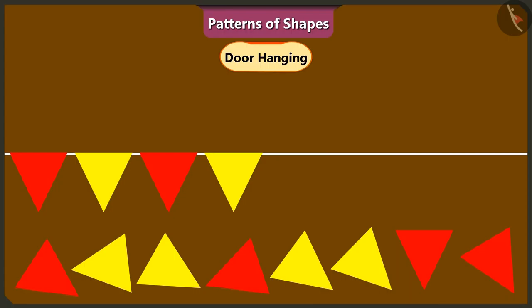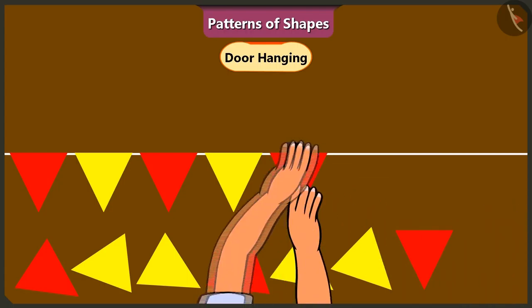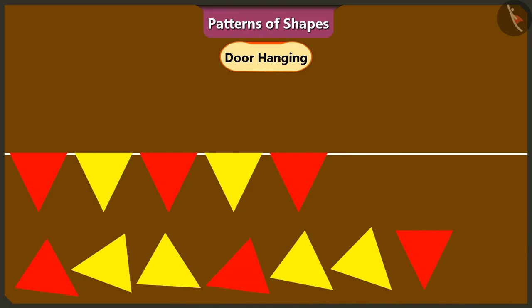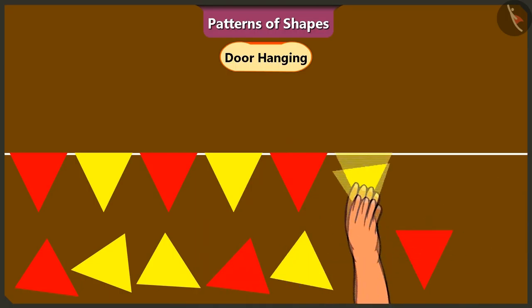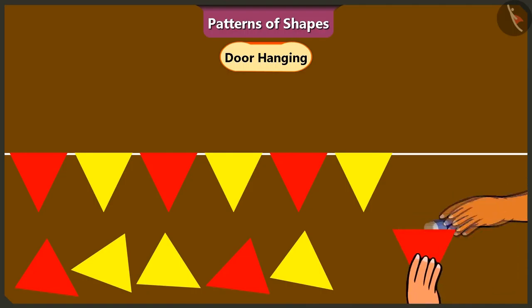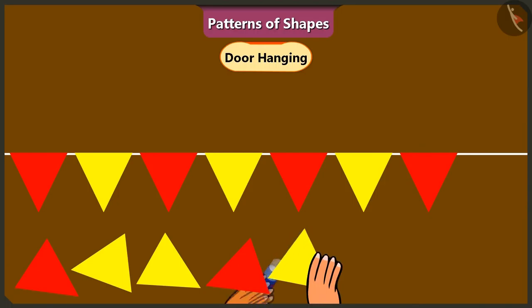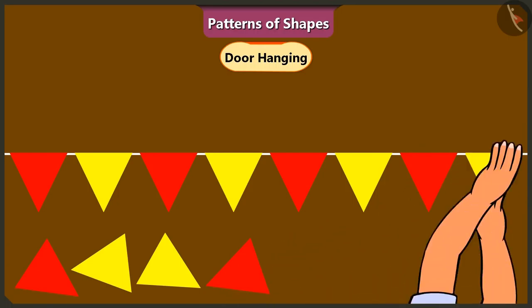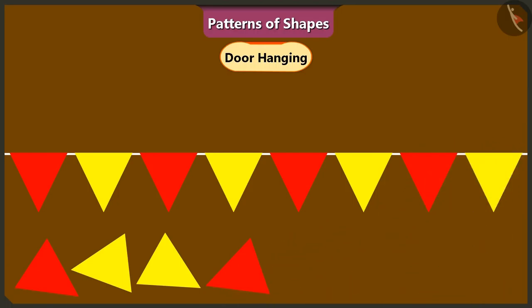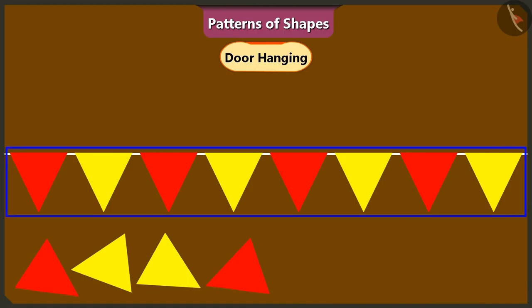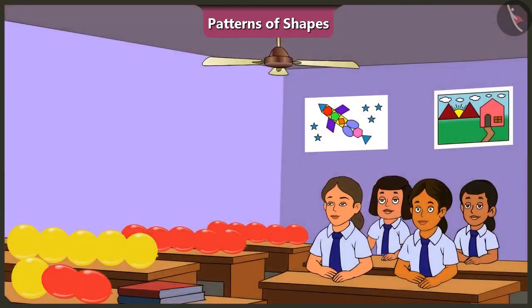I will put a red triangle in fifth place and a yellow triangle in sixth place like this. Now, let us keep repeating this pattern of triangles, first red and then yellow. Awesome. Both of you have done such a good job with the toran.